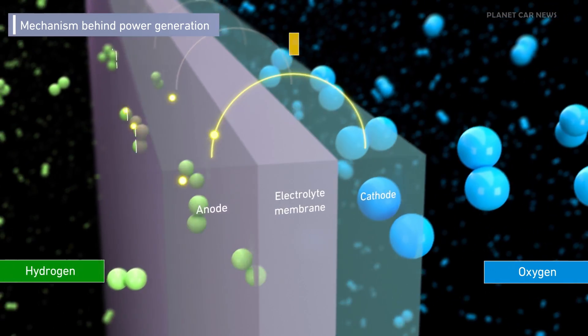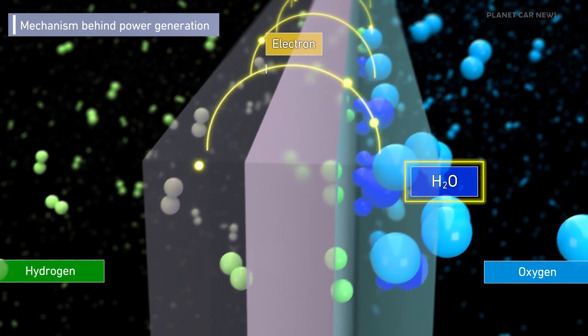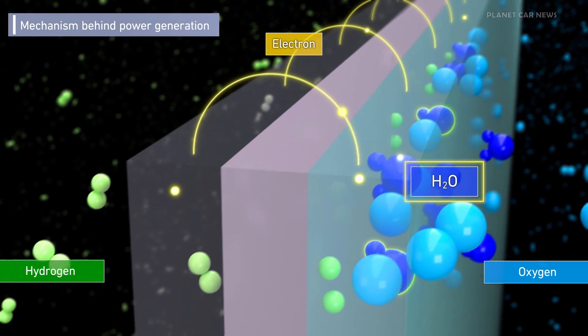Power is generated within each cell by reacting hydrogen with oxygen in the air. Only water is emitted.